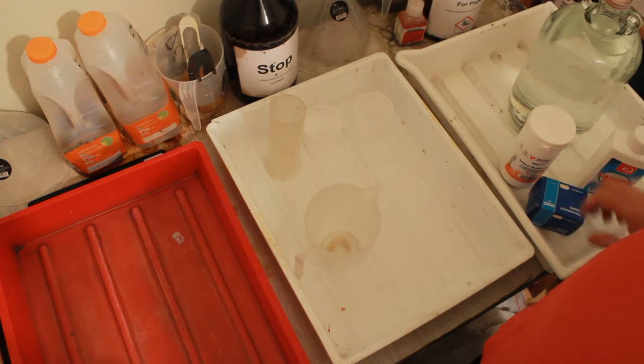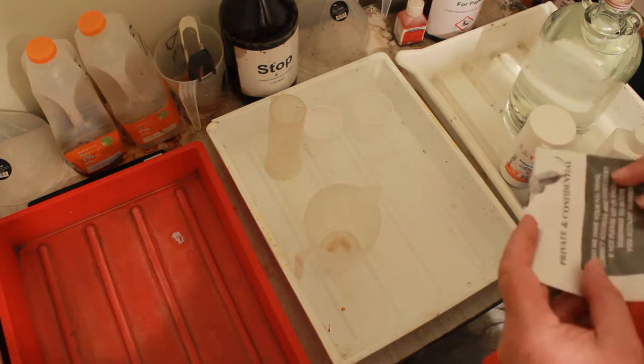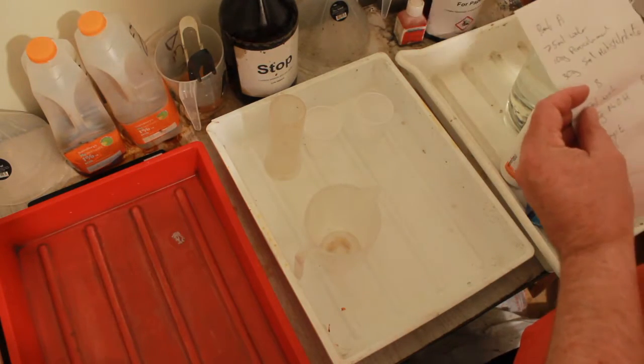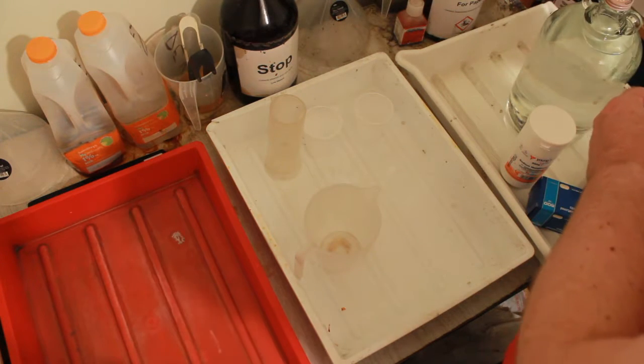Making my own Rodanol. I have the instructions somewhere, here we are, written on the back of an envelope. Part A: 75ml of water and 10 grams of paracetamol.